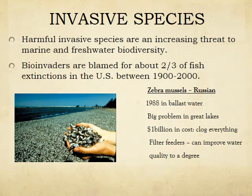One example is zebra mussels. They were brought in from Russia in 1988 in ballast water — that's the water that boats load up with in one spot to weigh them down so they can sail more efficiently. When they get to their destination, they release the water. That boat traveled to the U.S. Great Lakes, and when it was there it expelled the water and loaded cargo.